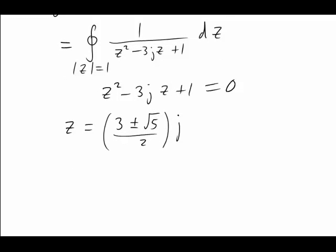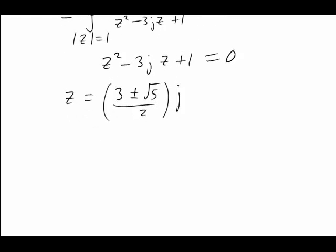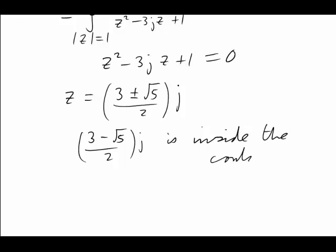We addressed the problem as to what is the magnitude of those roots, and we found that (3 - √5)/2 × j is inside the unit circle. So that's inside the contour. The other root, (3 + √5)/2 × j, was well outside, so we don't need to worry about it.